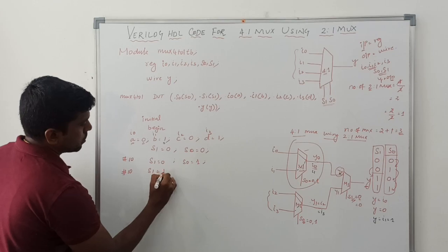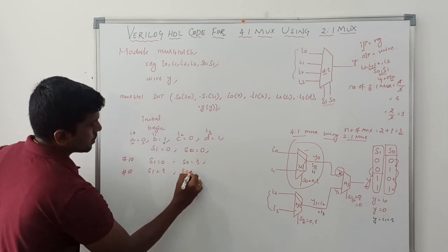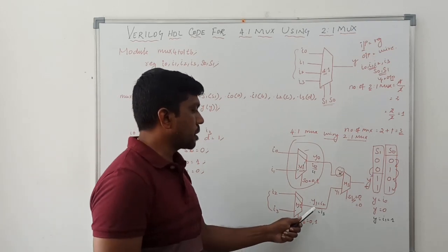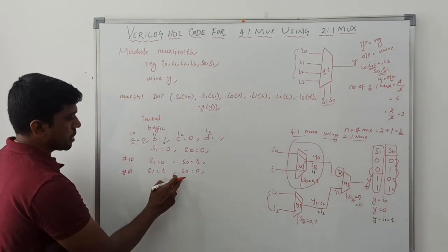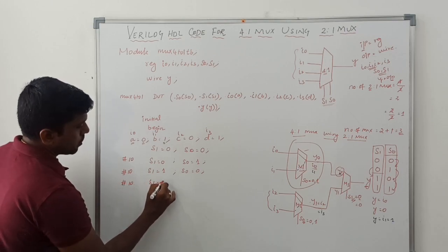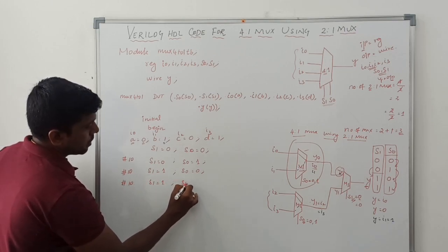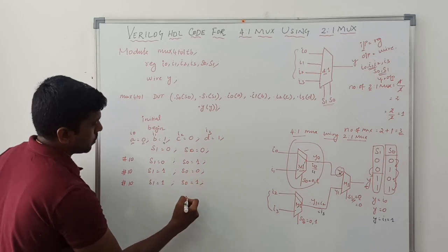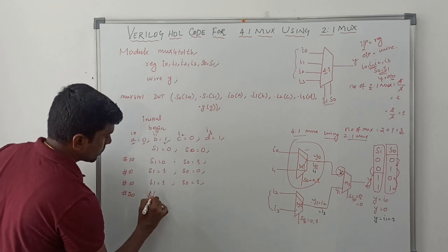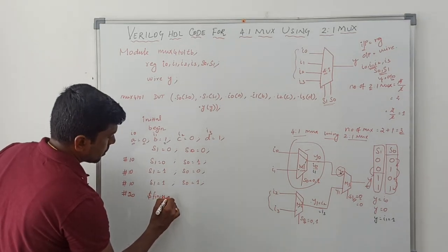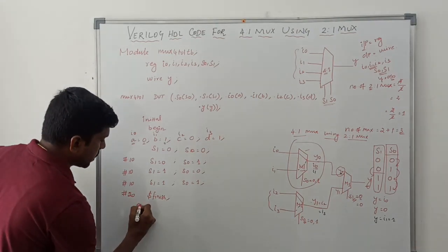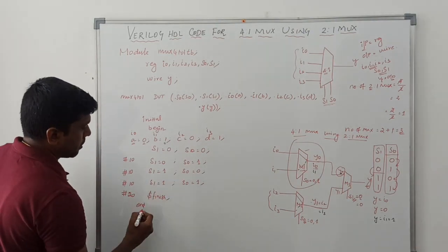The output is connected based on the selection line value. After another 10 nanoseconds, s1 goes to 1 and s0 goes to 1. After 15 nanoseconds, write finish to end the simulation.